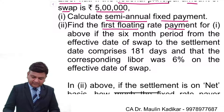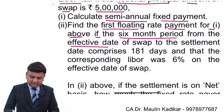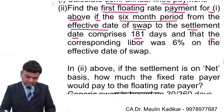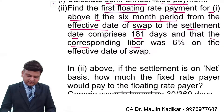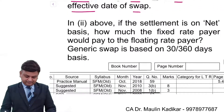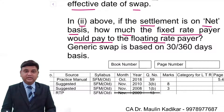The second part of the question: find the first floating rate payment if the 6-month period from the effective date of the swap to the settlement date comprises 181 days and the corresponding LIBOR was 6% on the effective date of the swap. In part three, if settlement is on a net basis, how much would the fixed rate payer have to pay to the floating rate payer?